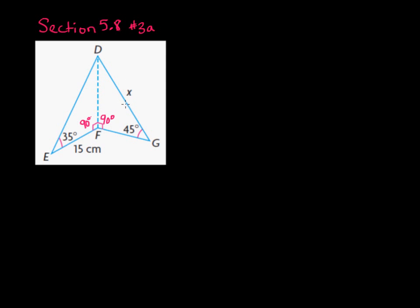Our strategy is to use triangle DEF first in order to solve for the common side length — let's call it h for height. Once we have h, we can use it as part of triangle DFG to solve for side length x.